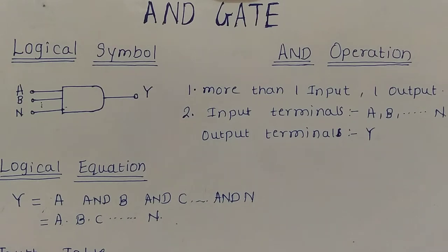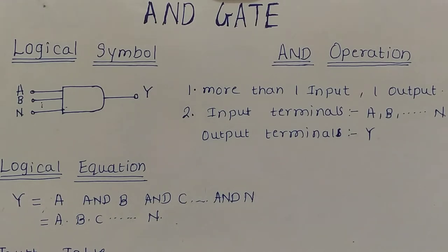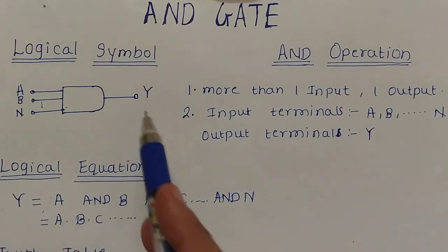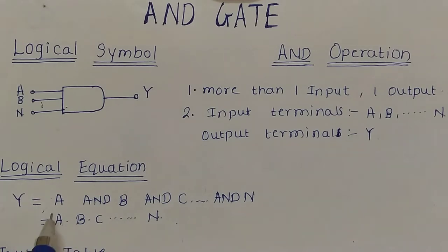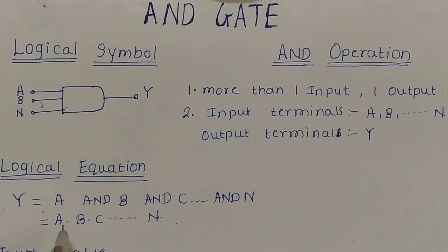Digital signals are applied at the input terminal of the AND gate. Digital signals means 0 and 1, or binary values. These input signals are applied at the input terminals A, B, up to N, and the output is taken at output terminal Y. The logical equation of the AND gate is Y = A AND B AND C... AND N, also represented as Y = A·B·C...·N.